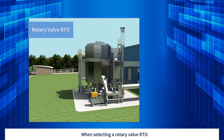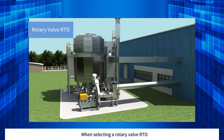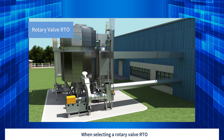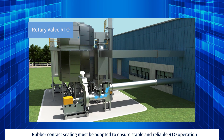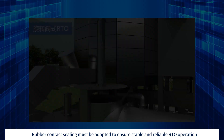When selecting a rotary valve RTO, the valve sealing mechanism is the most critical factor. Rubber contact sealing must be adopted to ensure stable and reliable RTO operation.